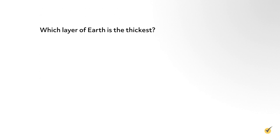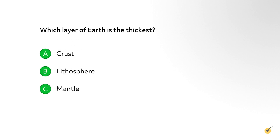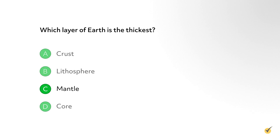Number two: which layer of Earth is the thickest? A, crust. B, lithosphere. C, mantle. Or D, core. The correct answer is C, mantle. It takes up about 84% of Earth's volume.